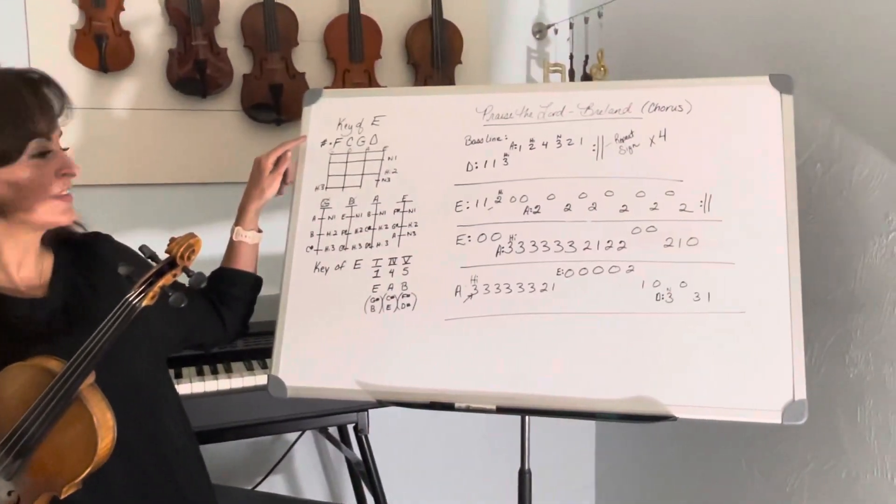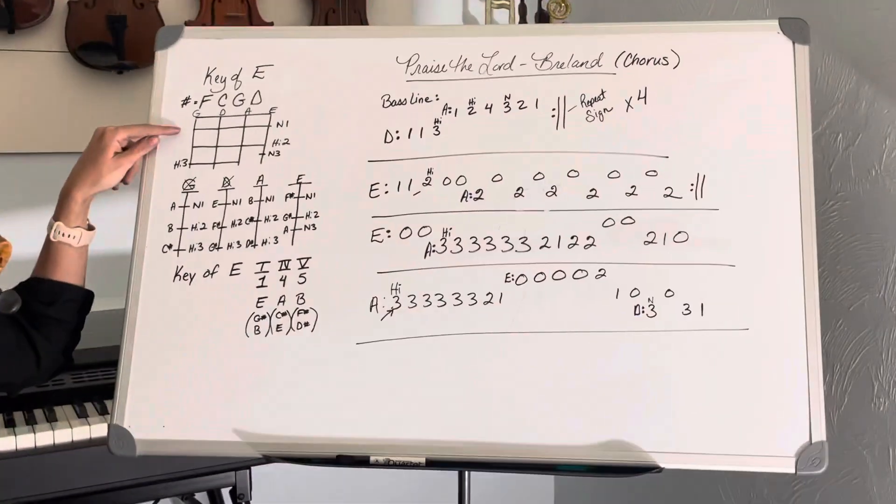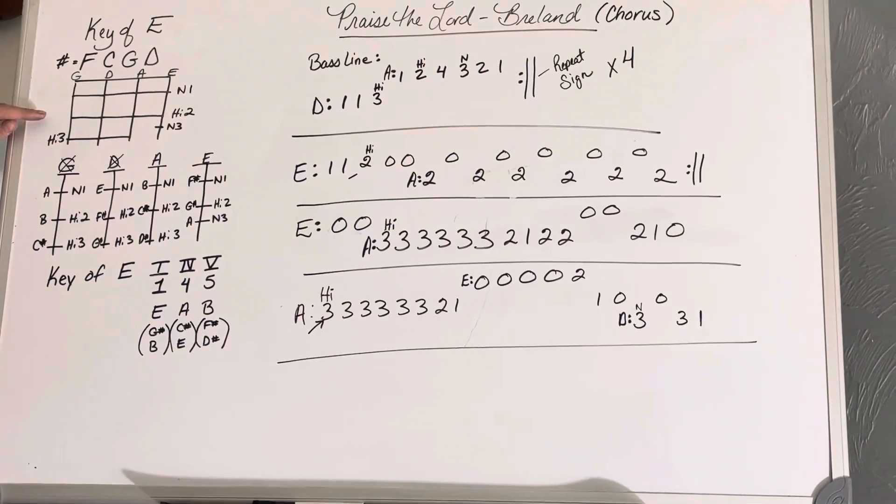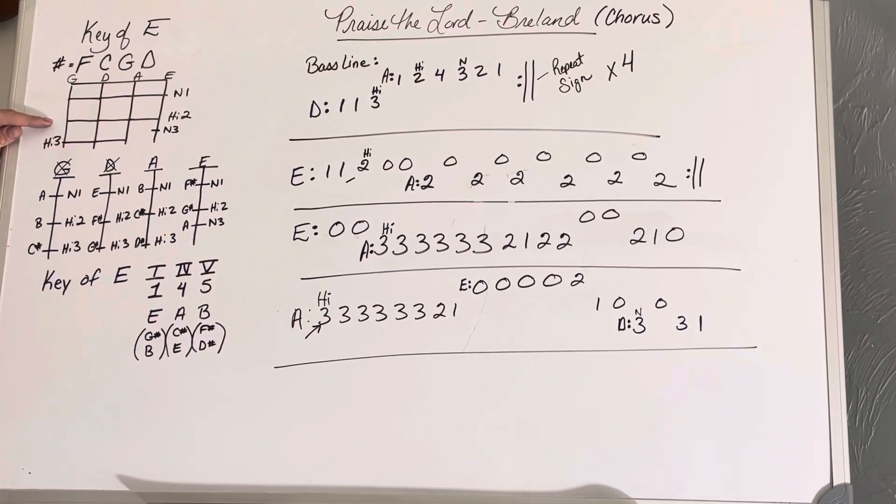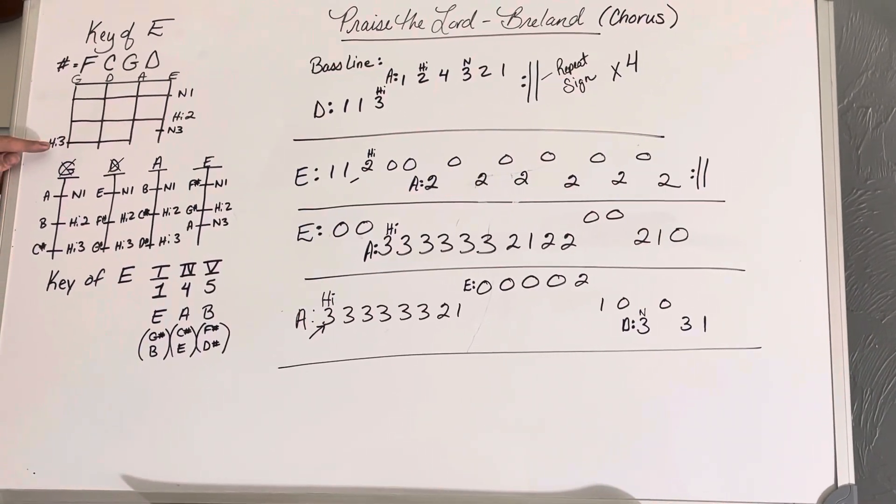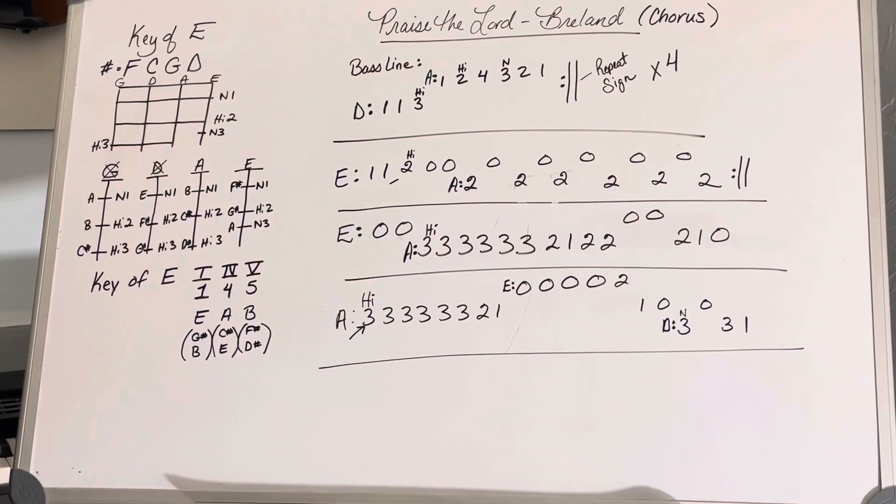This is in the key of E. So we have normal ones across the board on all of our strings, high two on all of our strings, high three on G, D, and A, and a normal three on E.